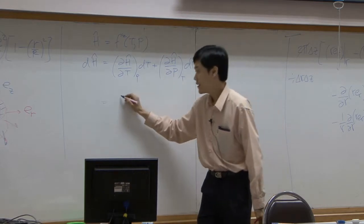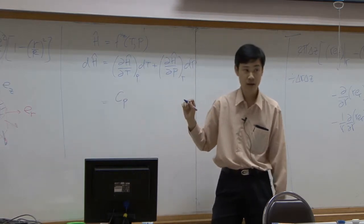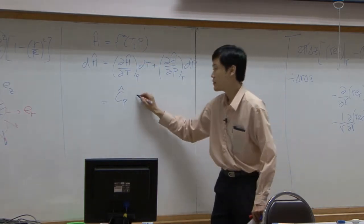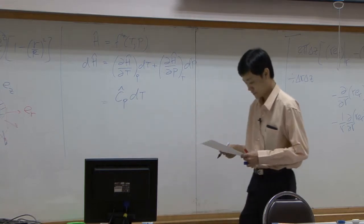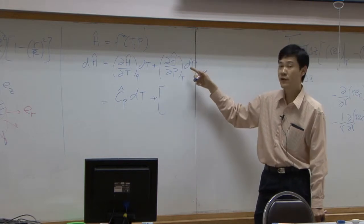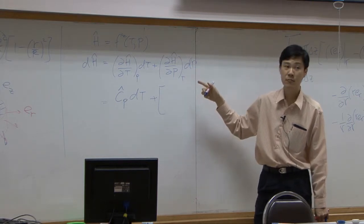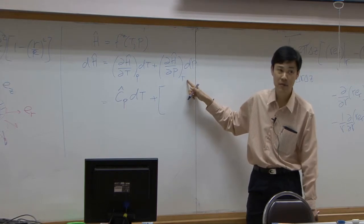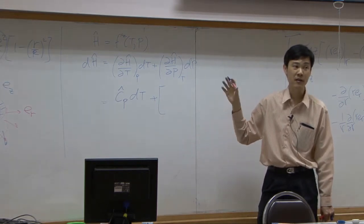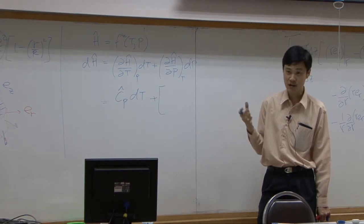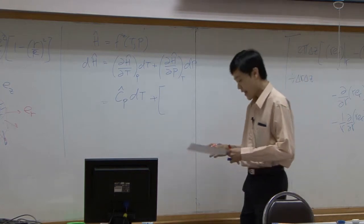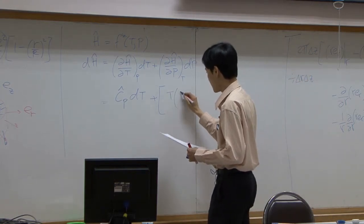It's CP, but now CP per mass. You get CP dT added by this term, the differentiation of enthalpy with respect to pressure at constant temperature. This term requires a little bit of manipulation. It requires the Maxwell law, Maxwell equation. At the end you can expand them like this.